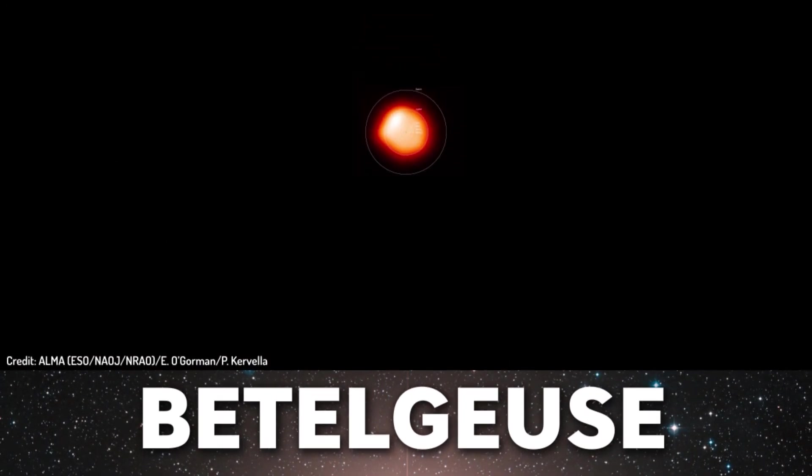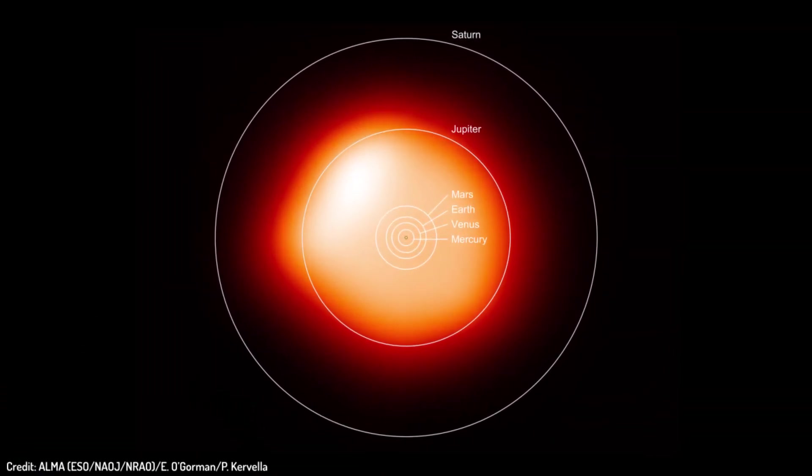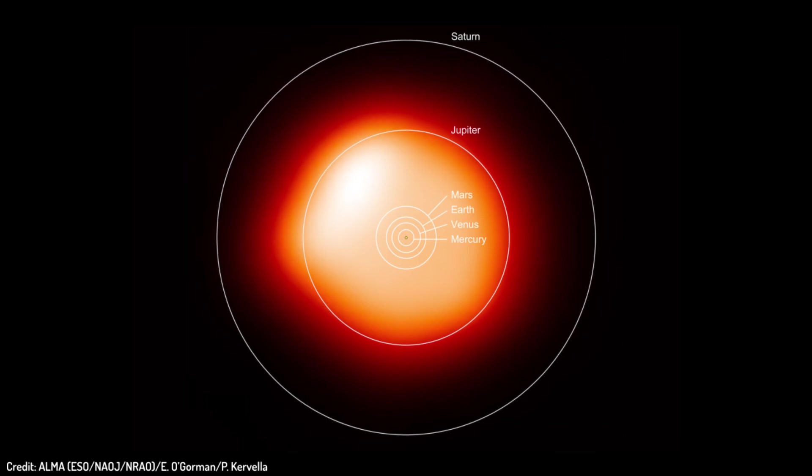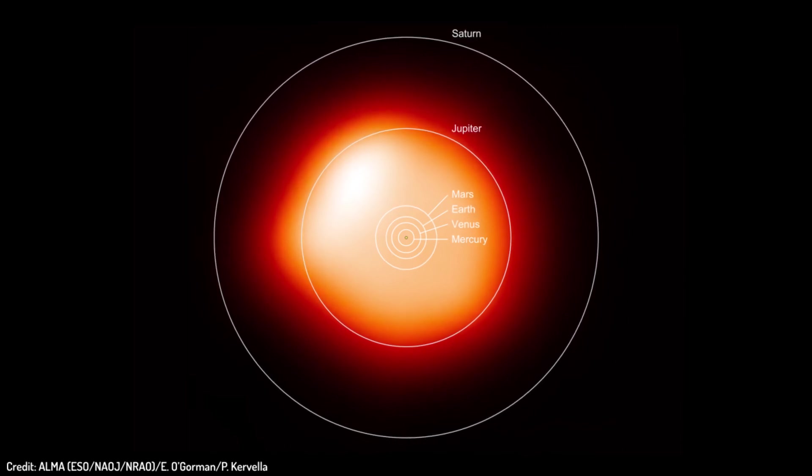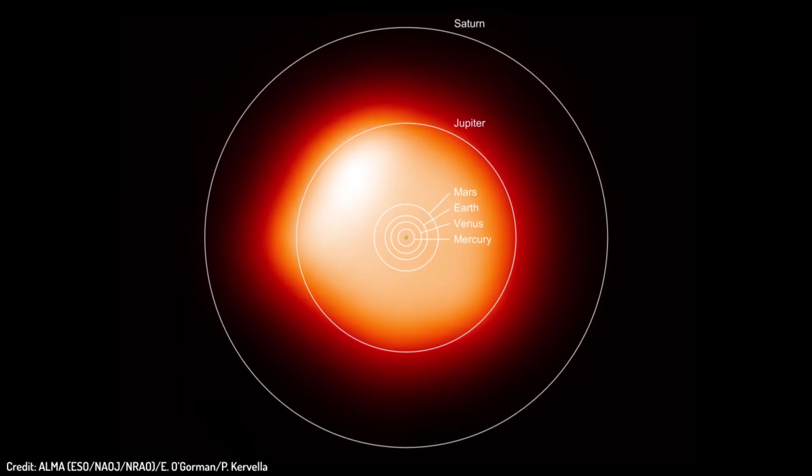Additionally, Betelgeuse is about 1,400 times larger than our sun. If it were placed in the sun's position in our solar system, Betelgeuse would extend past the orbit of Jupiter and its atmosphere still will be in the Saturn's orbit.